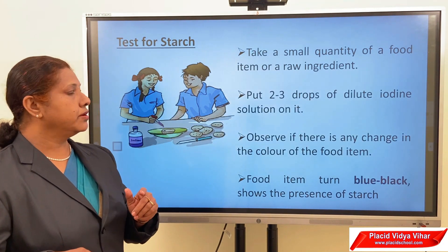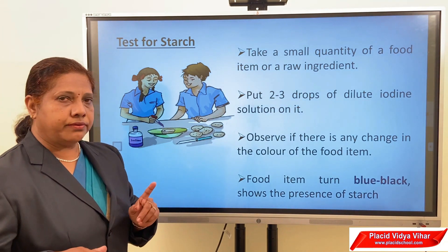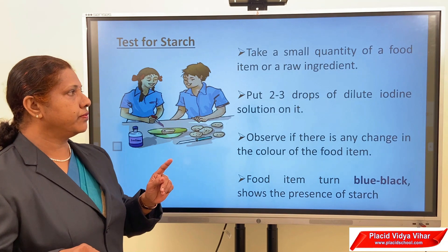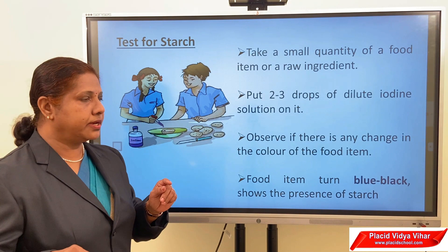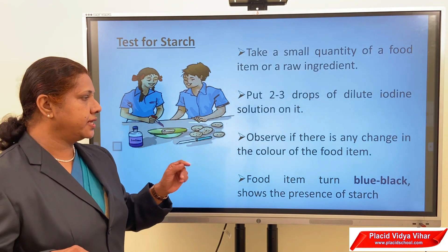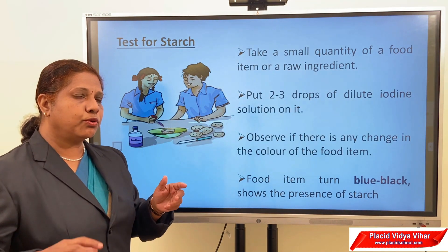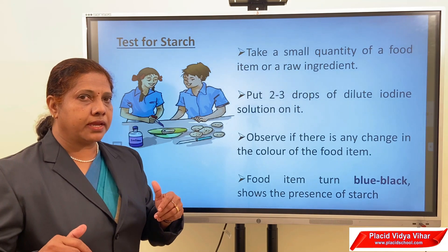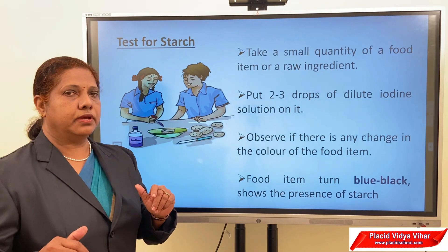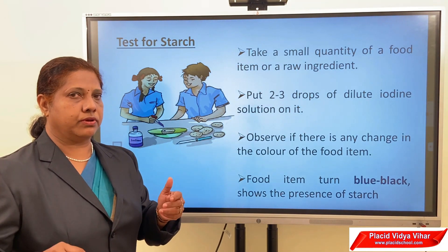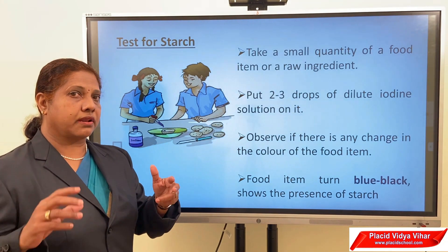To test for starch, use the iodine test. Take a small quantity of a food item and put two to three drops of dilute iodine solution on it. Iodine solution is yellow in color. Observe if there is any change in color. If the food item turns blue-black, that shows the presence of starch. If you do it with rice or potato, it will turn blue-black because these are rich in starch.